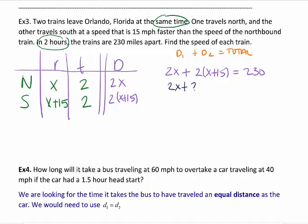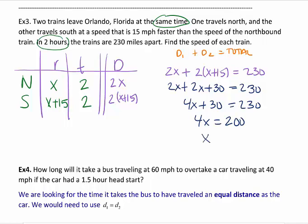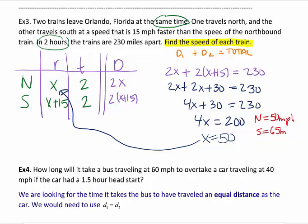We have 2x plus 2 times (x plus 15) equals 230. I'm going to get rid of my parentheses by distributing. Collect my like terms. So I get 4x plus 30 equals 230. Subtract 30 from both sides, that gives me 200. Divide both sides by 4, and that gives me 50. Super easy to see what I just solved for. 50 is my rate for my north train. So the north is going 50 miles per hour. The south is 50 plus 15, so it's 65 miles per hour. That is my answer for this problem.